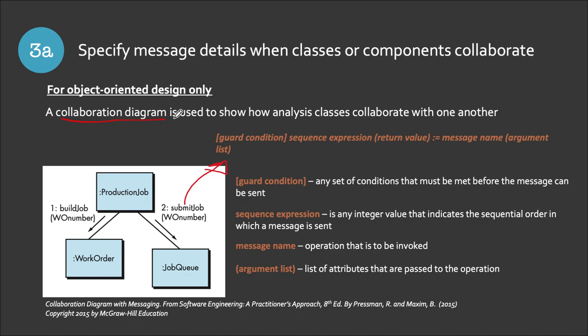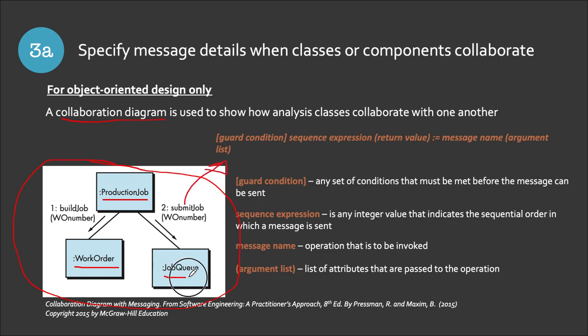What we are emphasizing in the collaboration diagram is the message-passing activity between components. Based on this collaboration diagram, we use the production job and also the work order in the job queue components. To write them, we can use the Object Constraint Language (OCL) syntax, so that we have a standard for passing messages from one component to another. The OCL syntax example is in the next slide; first let me explain the diagram.